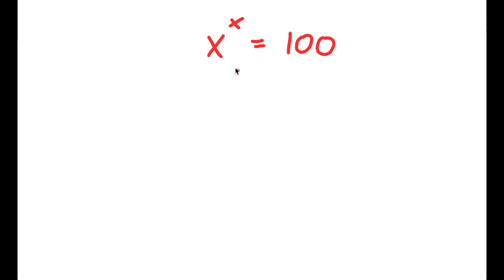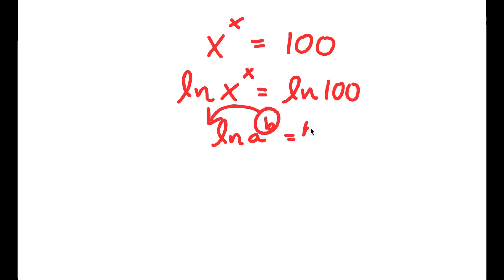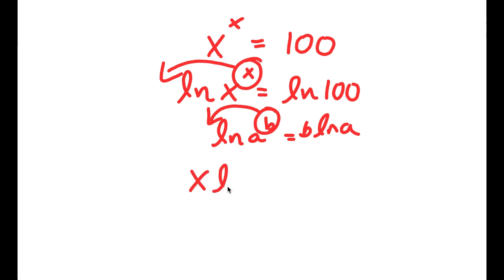In this problem I have x to the power of x is equal to 100. I'm going to start by taking the natural log on both sides, so I have ln of x to the power of x is equal to ln of 100. Using the log power rule, I can move the exponent x to the front: x times ln x is equal to ln 100.